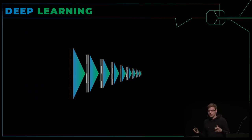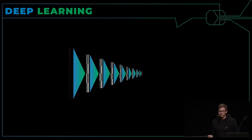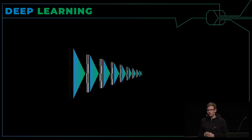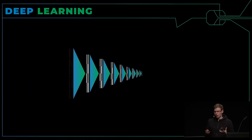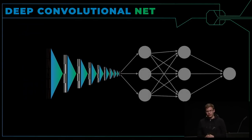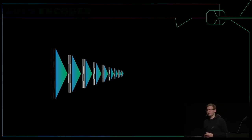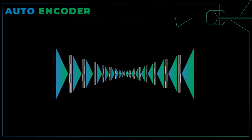Das können wir einmal oder mehrere hundert Male benutzen — und das wird dann gemacht, wenn wir von Deep Learning sprechen, also tiefem Lernen. Hier werden nur wenige Verbindungen benutzt, und das erlaubt uns sehr tiefe Dinge auszudrücken. Wir können ein ganzes Bild in nur sehr wenigen Werten ausdrücken, und was die bedeuten, wird über den Lernprozess beigebracht. Diese wenigen Werte können für ein Klassifizierungsnetzwerk benutzt werden — zum Beispiel das Netzwerk, was wir vorhin gesehen haben.